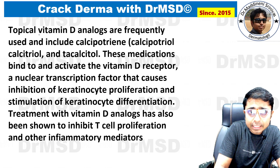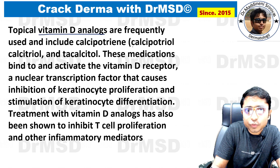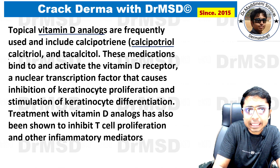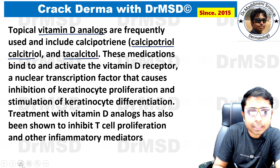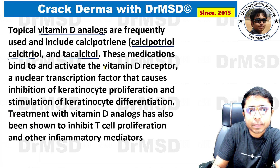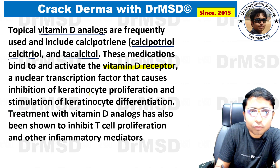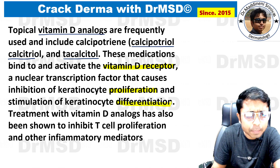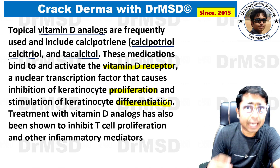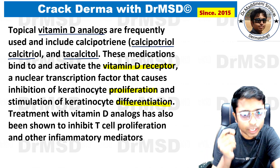Our answer is calcipotriol, a topical vitamin D analog. Calcipotriol is an umbrella term that includes calcipotriol, calcitriol, and tacalcitol. These drugs activate the vitamin D receptor, which is a nuclear transcription factor. This causes inhibition of keratinocyte proliferation and stimulates keratinocyte differentiation. The basic problem in psoriasis is excessive keratinocyte proliferation, and these vitamin D analogs keep it in check.